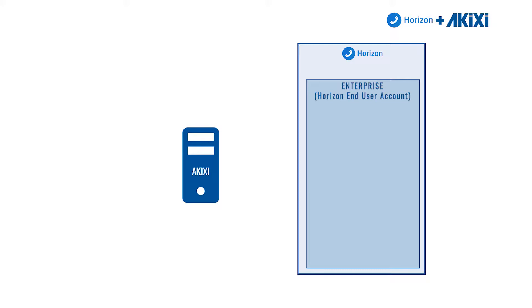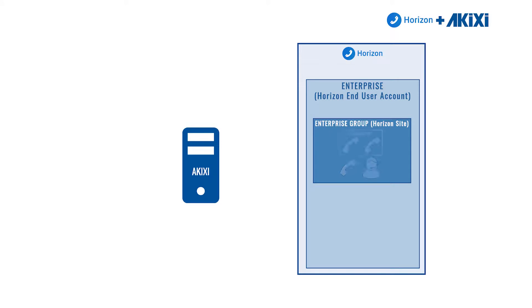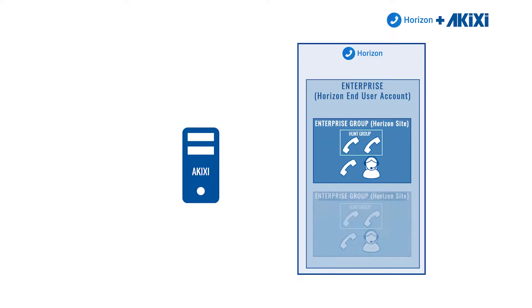Enterprises then have sub-components called enterprise groups. An enterprise group is where the information pertaining to that end-user's telephony estate would be held. It is possible to have multiple enterprise groups within a single enterprise, but for this example we're just going to focus on a single enterprise group.